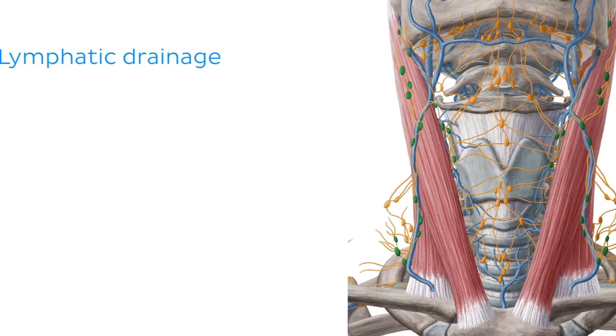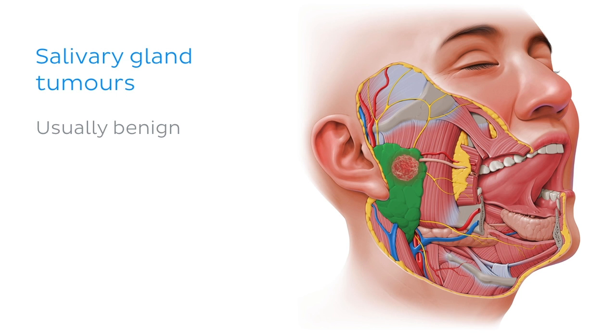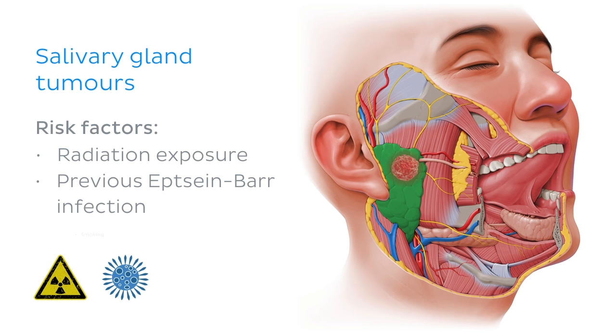Now that we're experts on the parotid gland, let's get clinical! Salivary gland tumours are relatively uncommon, but the most common site is the parotid gland. These tumours are usually benign, whereas tumours of the other major salivary glands are more likely to be malignant. Risk factors associated with parotid tumours include radiation exposure, previous Epstein-Barr infection, and smoking.